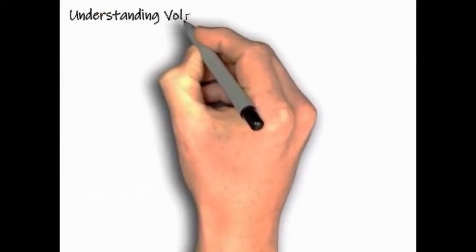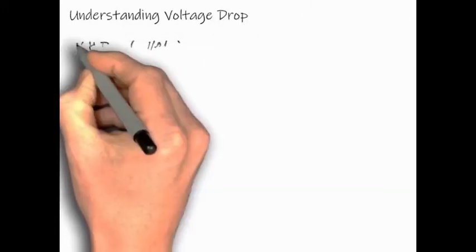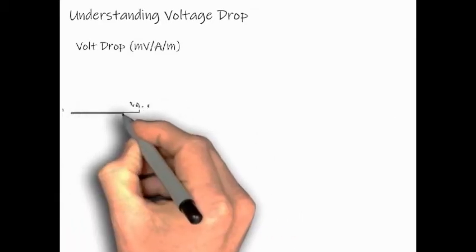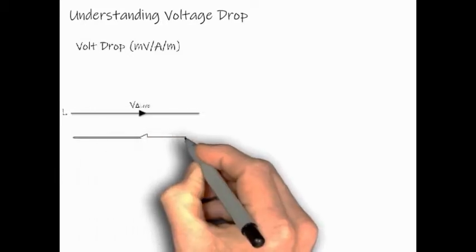Next, we're going to talk about voltage drop. Voltage drop can be represented in millivolt per ampere and per meter. The voltage drop can be calculated by finding the voltage difference on the conductors. For example, this can be done by adding the voltage difference between the live cable and neutral cable.